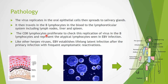The CD8 lymphocytes, or killer lymphocytes, proliferate to check the replication of the virus in the B-lymphocytes, and represent the atypical lymphocytes seen in Epstein-Barr virus infection. So in EBV infection we see atypical lymphocytes, which are nothing but the CD8 killer lymphocytes proliferating to check viral replication.